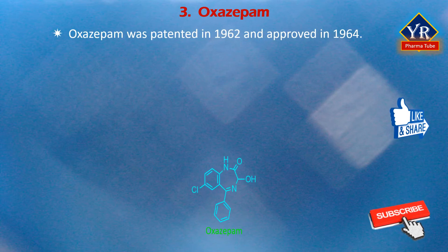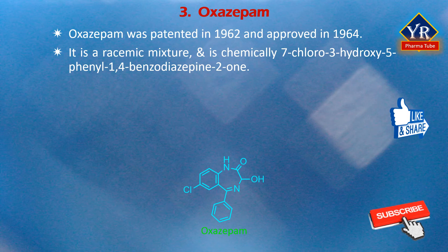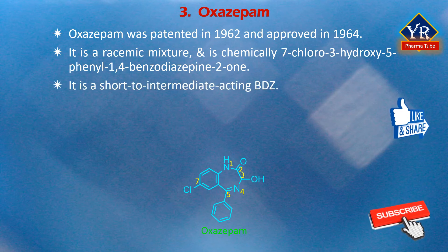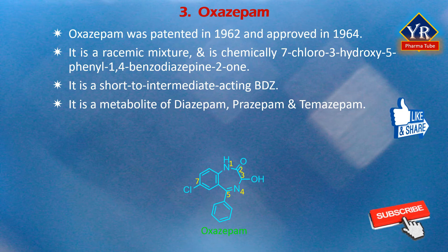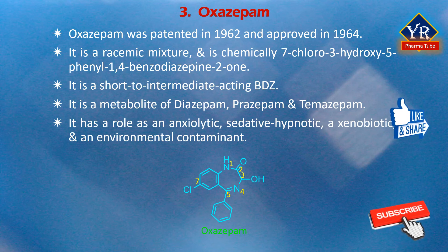The last drug of this lesson is Oxazepam. Oxazepam was patented in 1962 and approved for medical use in 1964. It is a racemic mixture, chemically known as 7-chloro-3-hydroxy-5-phenyl-1,4-benzodiazepine-2-one. It is a short- to intermediate-acting benzodiazepine and is a metabolite of diazepam, prazepam and temazepam. It has a role as an anxiolytic drug, a sedative-hypnotic, a xenobiotic and an environmental contaminant.